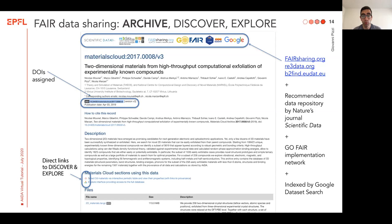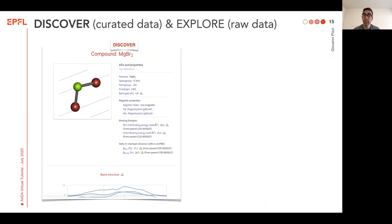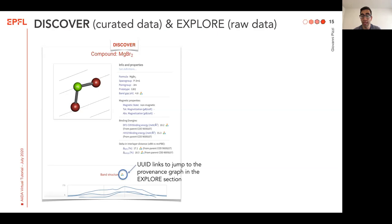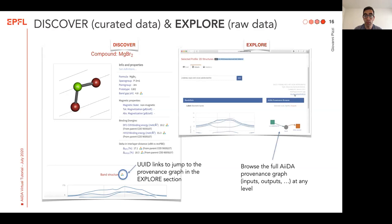Let's take an example of this project, which was a computational study of two-dimensional exploitable structures. Since this study was done with AIDA, we could create a Discover section. A Discover section is a section which hosts curated data. For each structure we found, we published a page with a three-dimensional visualization of the structure and a number of computed properties, including visualizations of band structures and phonons. Near a number of computations there is a little AIDA icon, and this icon is a link to the Explore section where you can directly browse the AIDA provenance graph as generated by AIDA. The Explore section is for raw data as computed by AIDA, and this can be created automatically from your AIDA database.